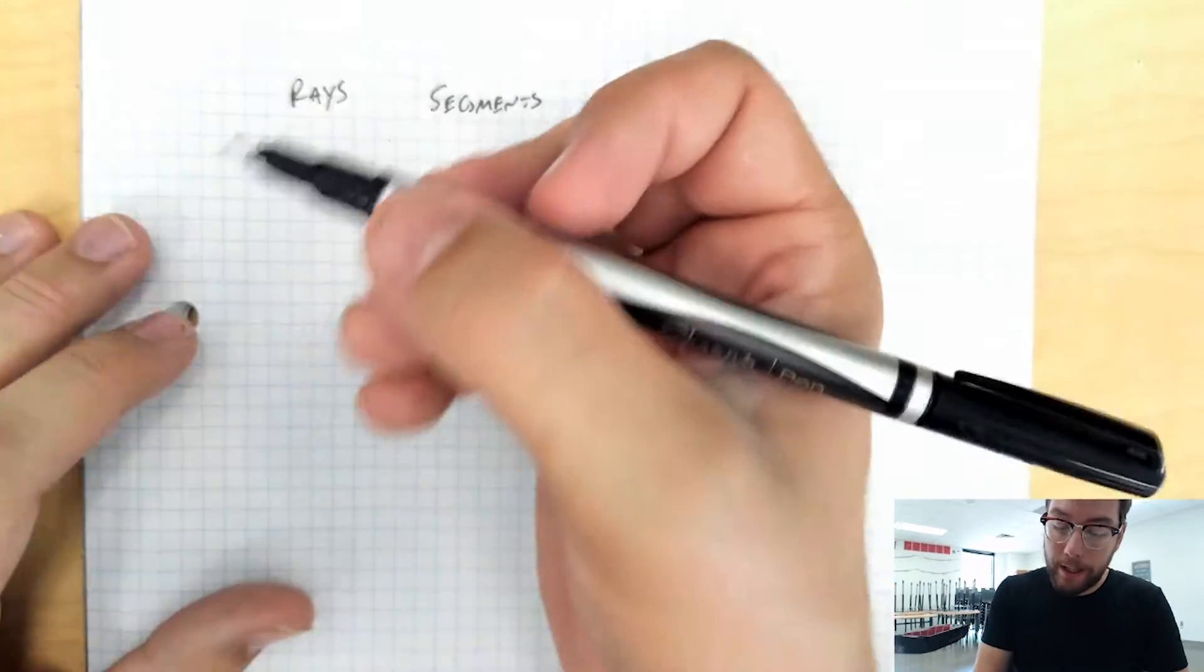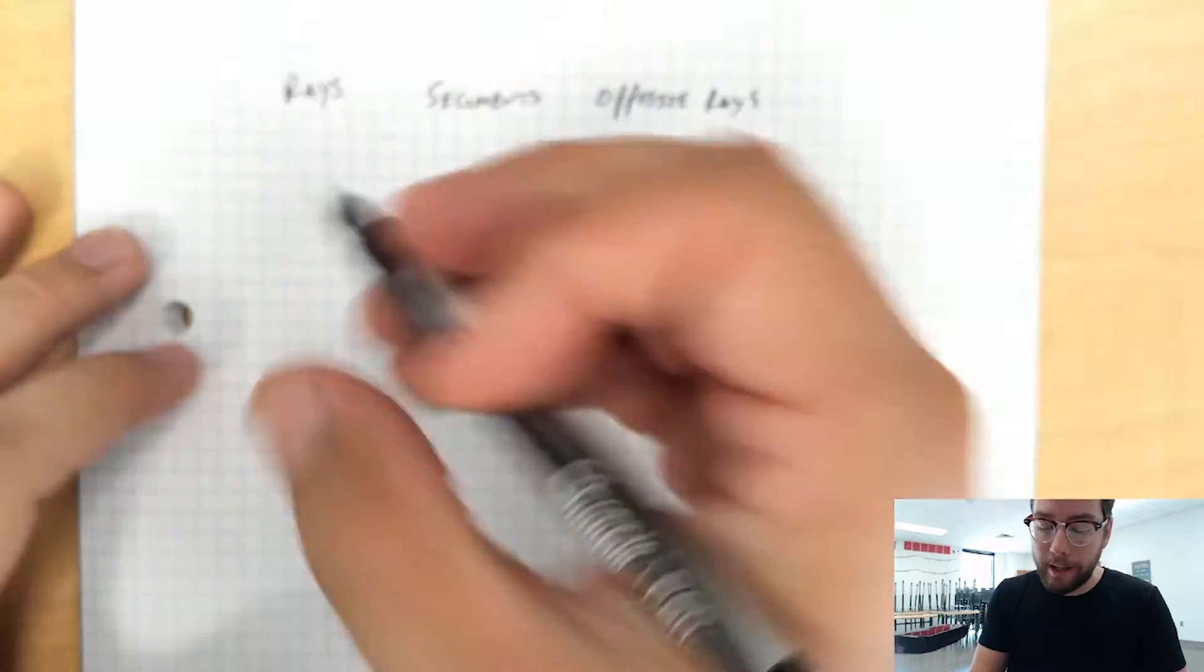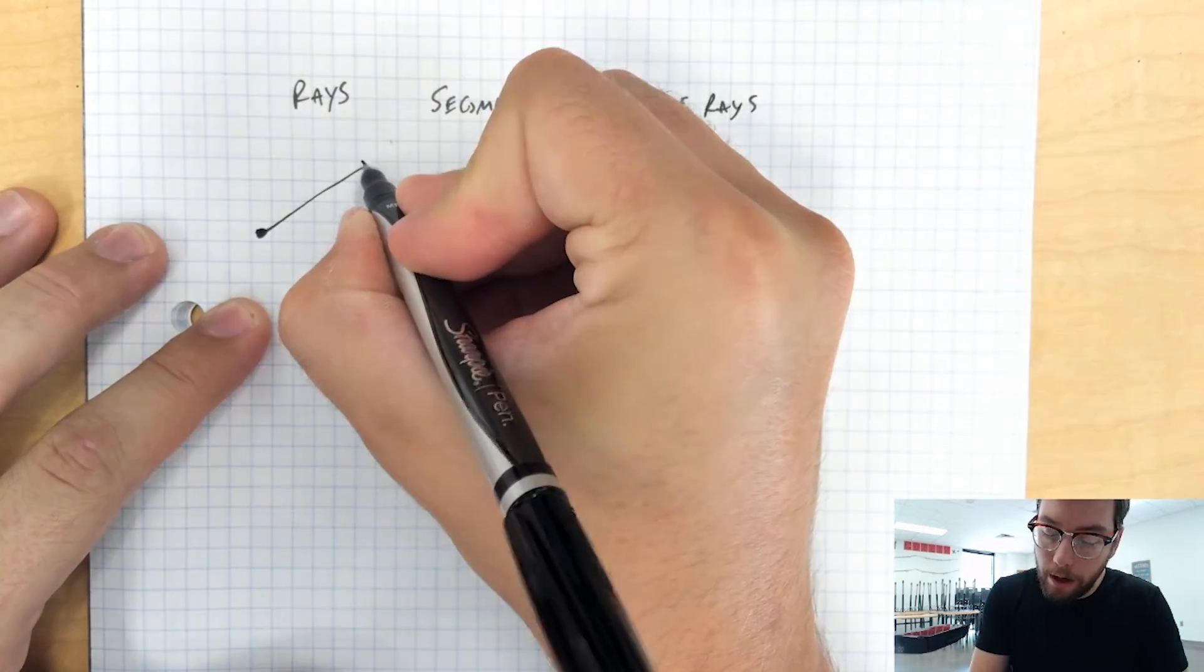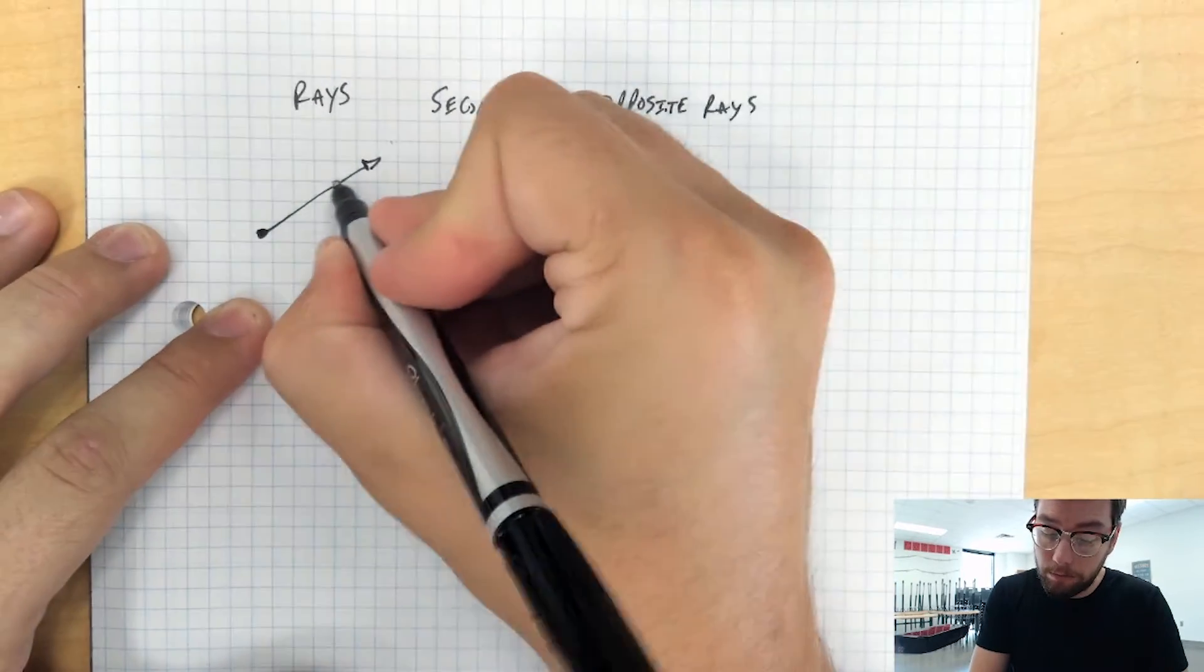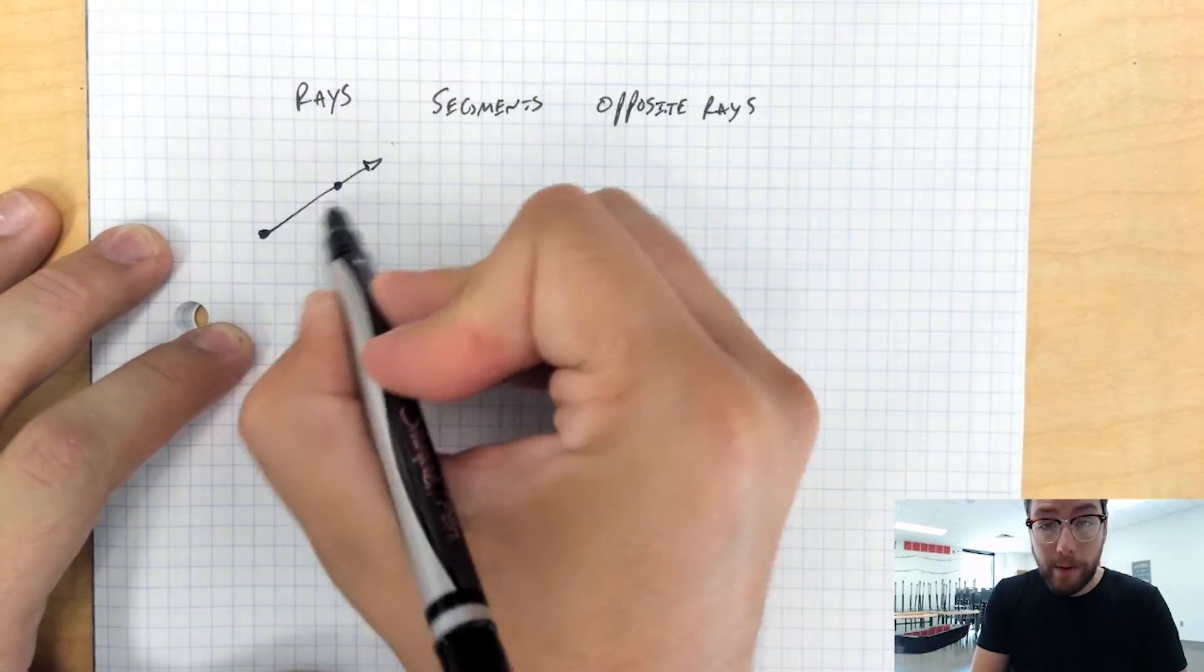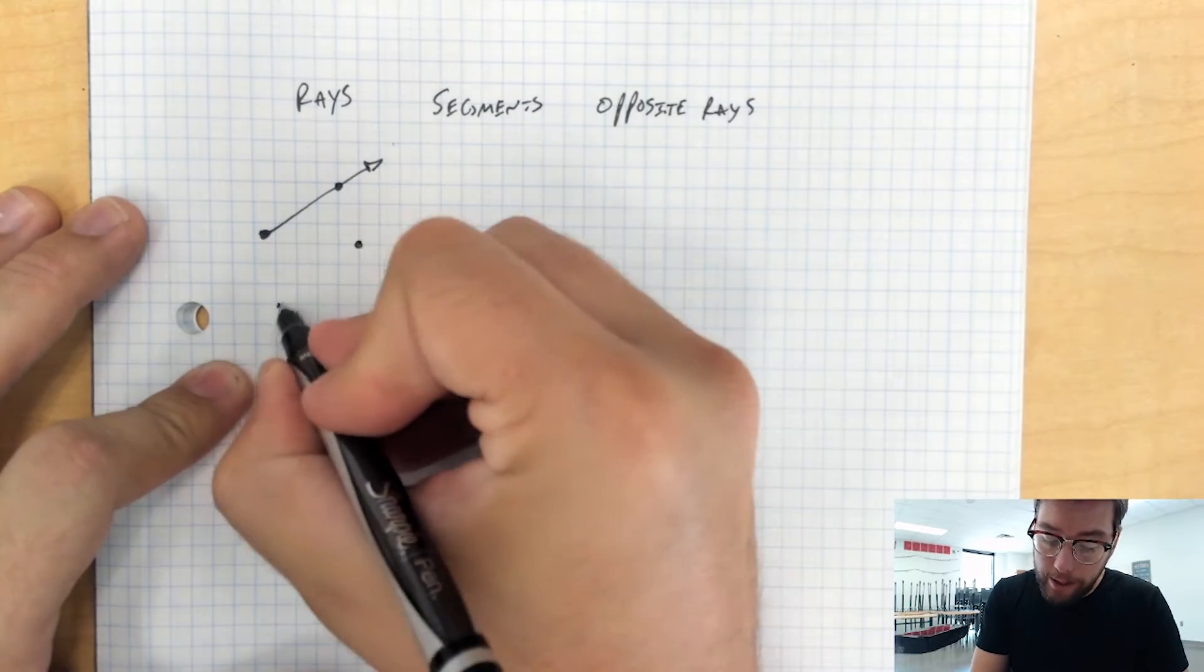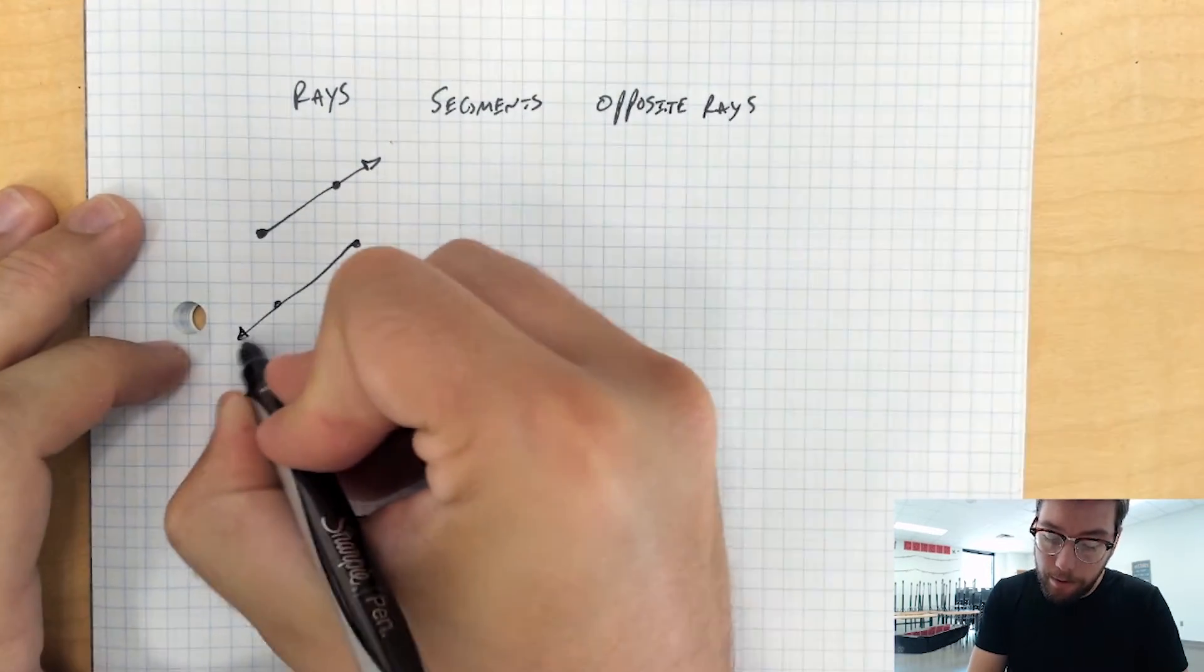So a ray is a part of a line that starts at an endpoint and then goes off in one direction forever. To have a ray, we always have to have at least two points labeled. So a ray can go off in any direction that we want it to.